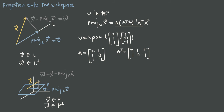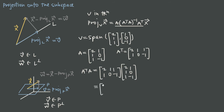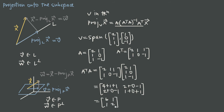Now we start chipping away at the formula. The first thing we want to find is A-transpose A. Computing the product, we get: top-left entry is 2×2 + 1×1 + 1×1 = 6; top-right is 2×1 + 1×0 + 1×(-1) = 1; bottom-left is 1×2 + 0×1 + (-1)×1 = 1; bottom-right is 1×1 + 0×0 + (-1)×(-1) = 2. So A-transpose A = [[6, 1], [1, 2]].